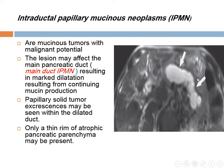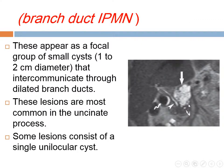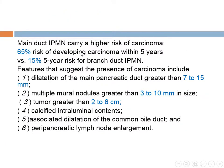Intraductal papillary mucinous neoplasm also has malignant potential. Either the main duct is involved — showing the main duct is enlarged — or we have the branch type, appearing as multiple or multiloculated cysts. The malignant potential for main duct type is 65%, while for the branch duct type it is only 15%. Features suggesting carcinoma include dilatation of the main pancreatic duct more than 7 to 15 mm, mural nodules greater than 3 to 10 mm, tumor greater than 2 to 6 cm, calcified intramural content, associated dilatation of CBD, and pancreatic lymph nodes.